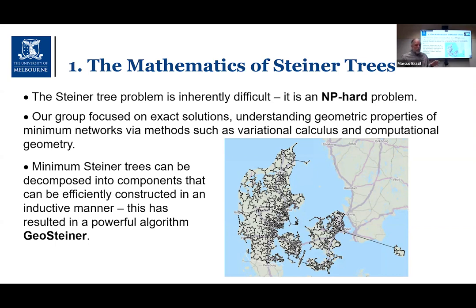We try to exploit those geometric properties to find algorithms that are as good as possible for constructing minimum networks. It turns out minimum Steiner trees can be decomposed into components that can be efficiently constructed inductively, leading to reasonably efficient algorithms. The really difficult part is the exponential number of different topologies — different patterns of connections — that can occur, which makes finding the global minimum hard.